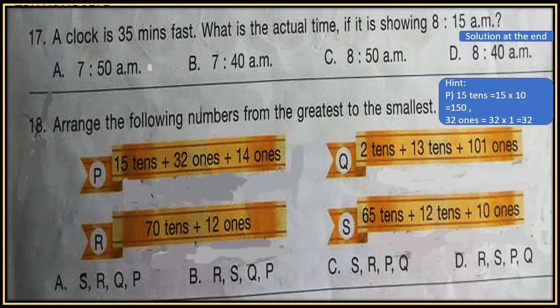Question 17: A clock is 35 minutes fast. What is the actual time if it is showing 8:15 AM? The clock is 35 minutes fast, so we have to calculate the actual time. It is showing 8:15 AM now. Check the solution at the end of video.